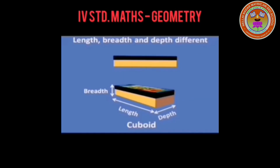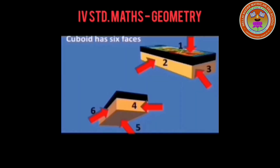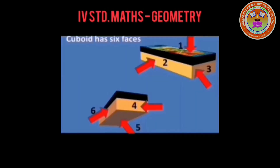This 3D shape is a cuboid, which has different length, breadth, and depth. A cuboid has rectangular faces. A cuboid has 6 faces and 12 edges.